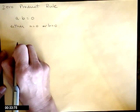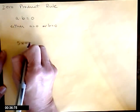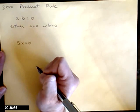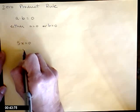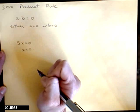So for example, if I have 5x equals zero, the only way these two numbers can multiply to be zero is that one of them has to be zero. Well, the 5 isn't, so that means the x must be zero.